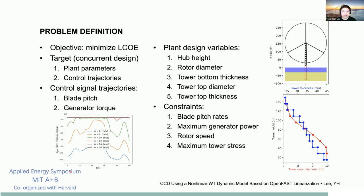The control trajectories include blade pitch signal and generator torque signal, which control turbine behavior. Plant design variables include hub height, rotor diameter, tower bottom thickness, tower top diameter, and tower top thickness. We limit to five plant design variables here to keep computational cost manageable.